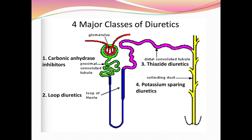First is the glomerulus, then the proximal convoluted tubule, then the loop of Henle — which has ascending and descending parts — and finally the distal convoluted tubule and collecting duct. Different diuretic drugs act at different parts of the nephron.